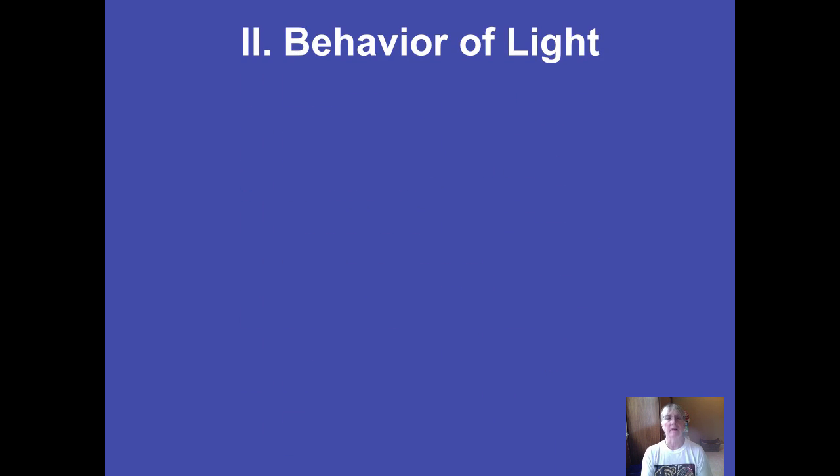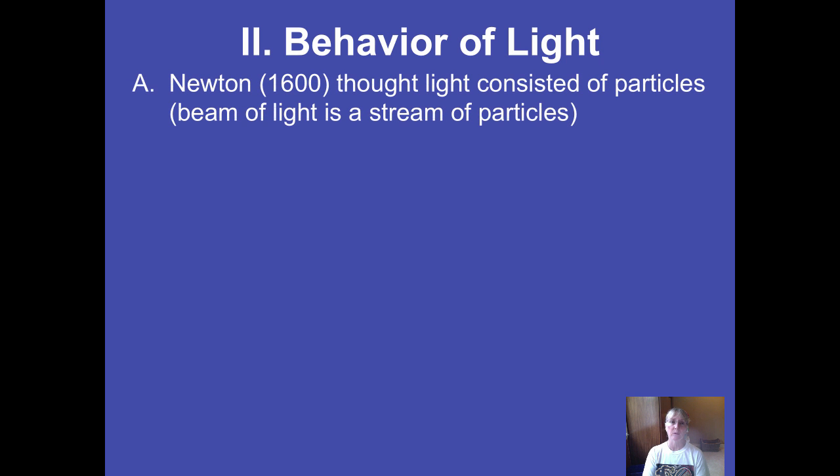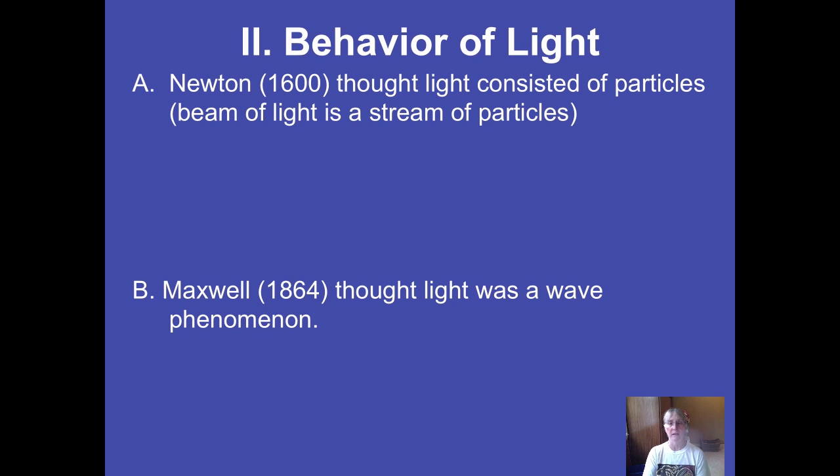We're now going to look at the second part of our Chapter 5 lecture on electrons and where they're located. To understand where electrons are located, we have to understand the behavior of light, because the two are connected almost interchangeably.